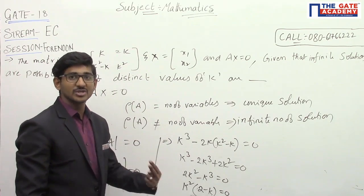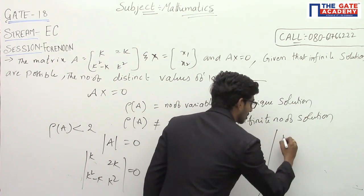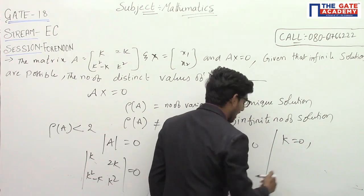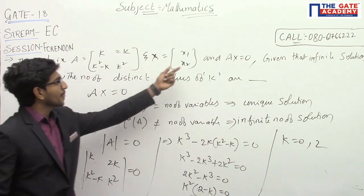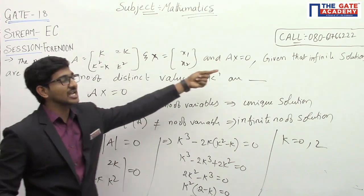So, we are getting two different values for k. That means, k equal to 0, k equal to 2. These two are two distinct values, which as well, this matrix gives infinite solution.